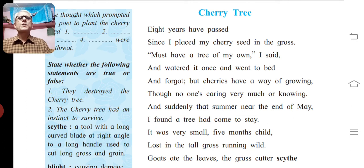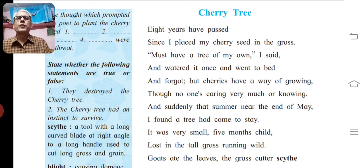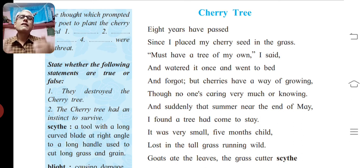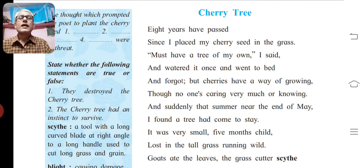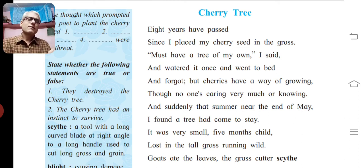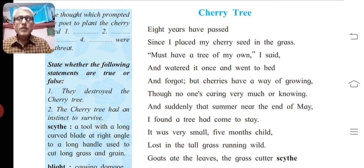There is another figure of speech similar to alliteration, and that is repetition. In repetition, the words themselves are repeated in the same line of the poem for emphasis. In alliteration, only the sound is repeated; in repetition, the words themselves are repeated. This is the key difference between alliteration and repetition.